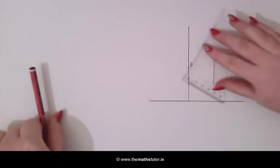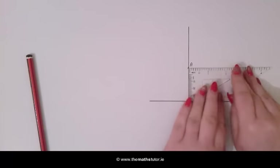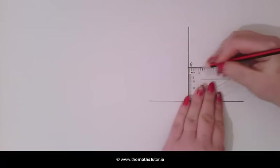We then turn our set square and we draw another line perpendicular passing through A.